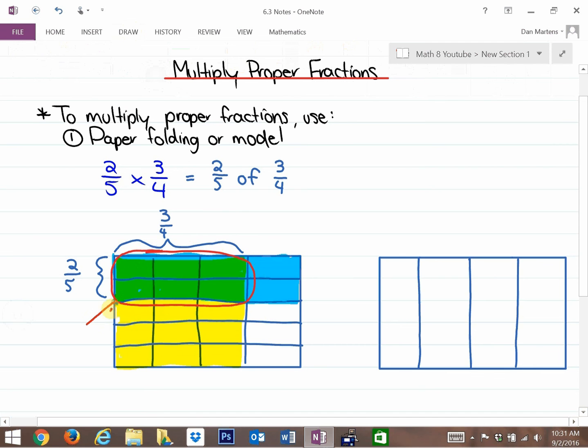So that's six parts out of a total, and if you count all of the parts, you'll notice that there's 20 parts in total. So that's six-twentieths, which is your answer. You could reduce that by dividing by two, and you get an answer of three-tenths. That's the answer to 2/5 × 3/4 using the paper folding method.